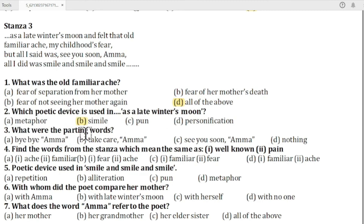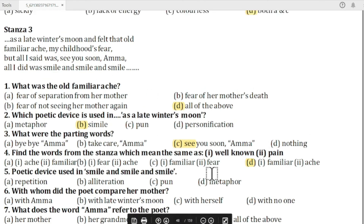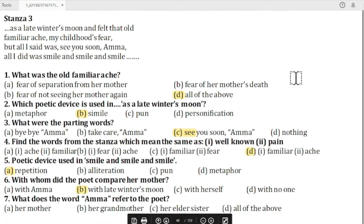Question three: what were the parting words? The answer is C — 'See you soon, Amma.' Question four: find the words from the stanza which mean 'well known' and 'pain.' The answer is D — familiar and ache. Question five: which poetic device is used in 'smile and smile and smile'? The answer is A — repetition. Question six: with whom did the poet compare her mother? The answer is B — with the late winter's moon. Question seven: what does the word 'Amma' refer to for the poet? The answer is A — her mother.